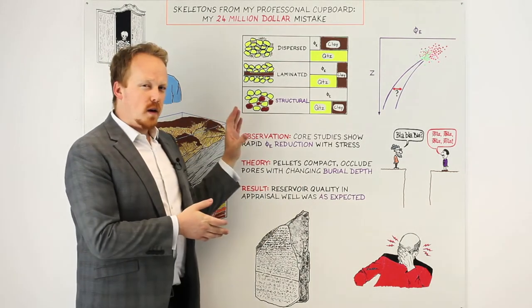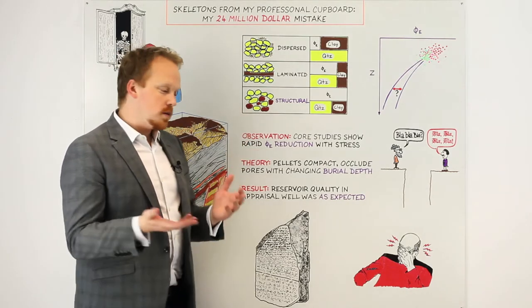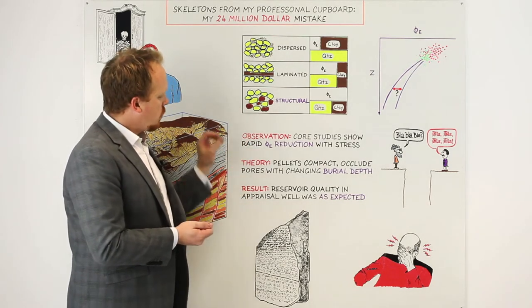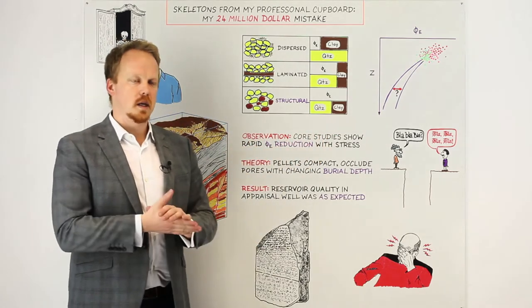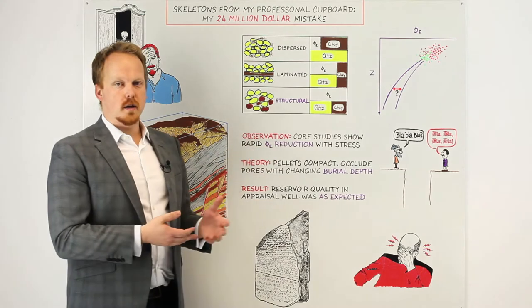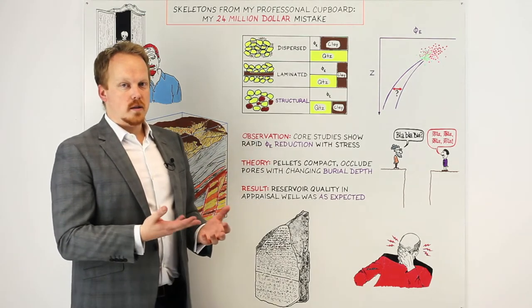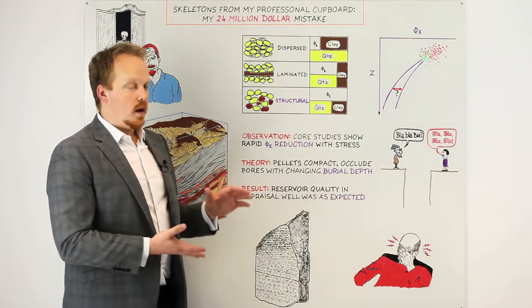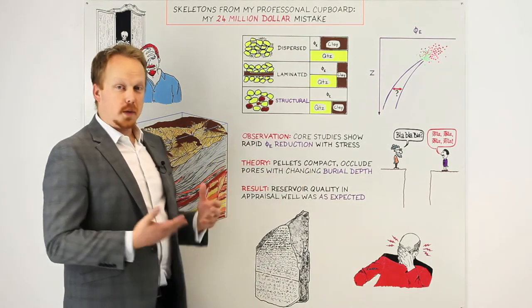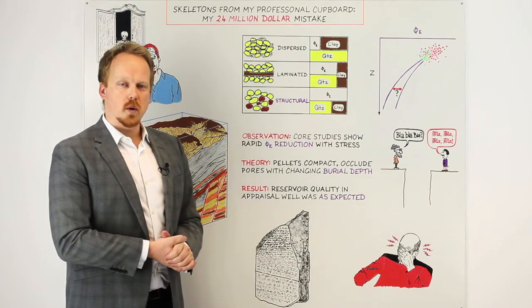However, those pellets were relatively ductile, and what we observed in the core was that we would see a dramatic reduction in porosity and permeability associated with increasing external stresses. So the theory then was that if we went down deeper in depth, particularly below mudline, we would probably expect to see a poorer quality reservoir.